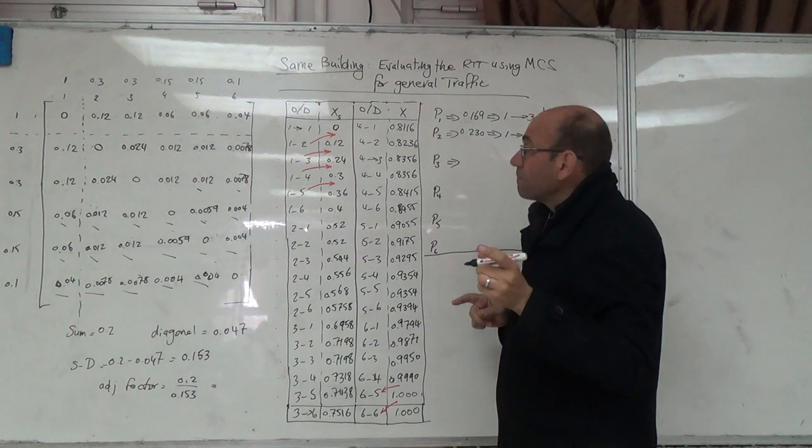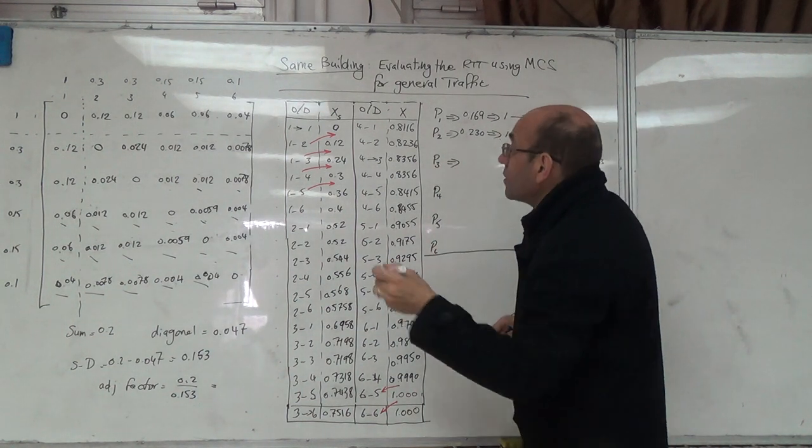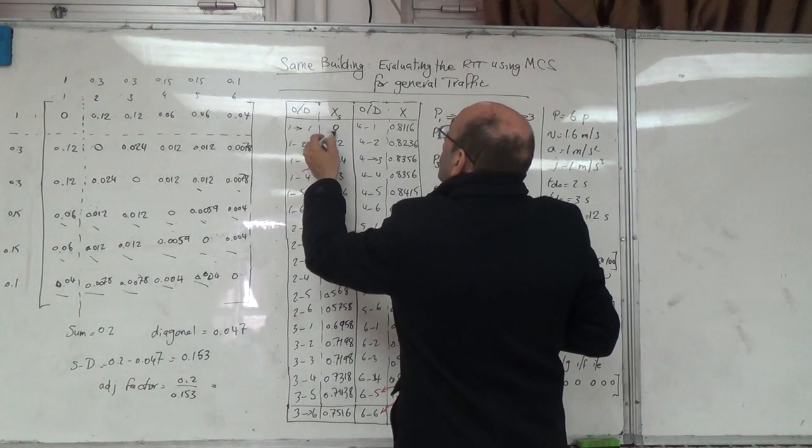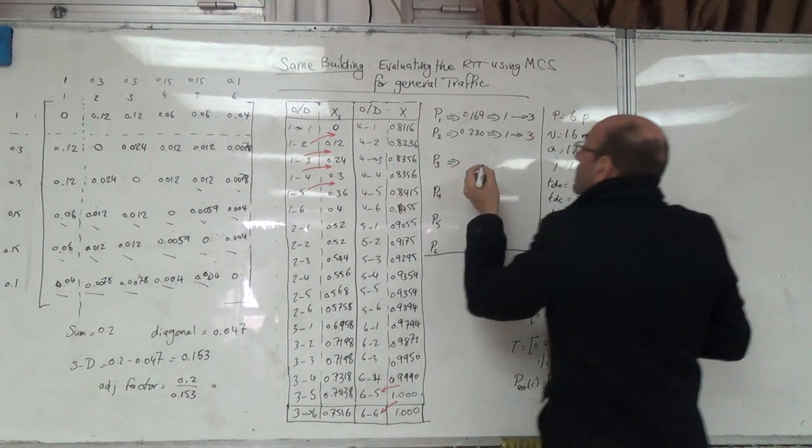0.63, 0.64, 0.074. We will go from those two, we will start with 1 to 2.